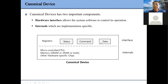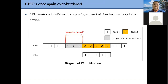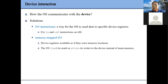We have two ways for the CPU to access IO registers. One way is to use IO instructions, which means we have specific instructions for IO operations. Or we can use memory-mapped IO, in which we can utilize load and store instructions to access IO registers.